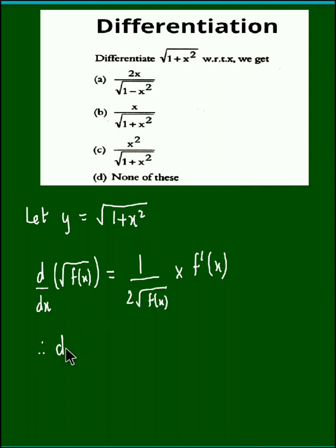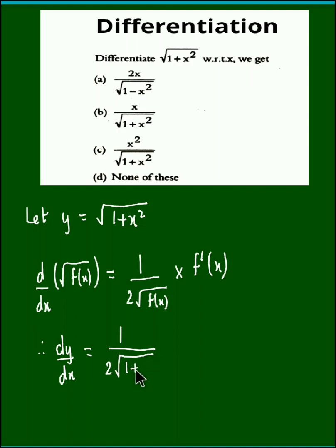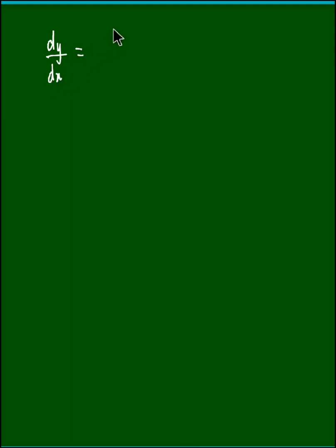Therefore, dy upon dx is equal to: in this case f(x) is 1 plus x squared. Using this chain rule we get the answer as 1 upon 2 root f(x) — where f(x) is 1 plus x squared — times the derivative of f(x), which is 1 plus x squared. So dy by dx is equal to 1 upon 2 root of 1 plus x squared, multiplied by the derivative of that part.